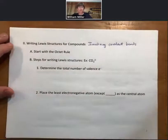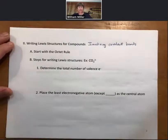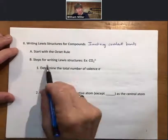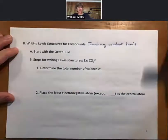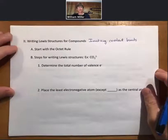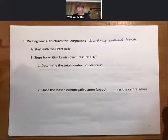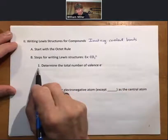Start with the octet rule. That means we want them to have eight electrons each. Then steps for writing Lewis structures. These are my steps, so there are other ways of doing this. As long as you get the right answer, there are many ways to do this. I'm going to count up the total number of valence electrons, so this is step one.